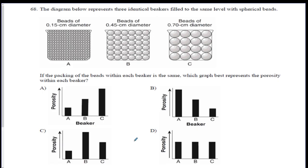Alright, one more question. The diagram represents three identical beakers, filled to the same level, with beads. If the packing of the beads within each beaker is the same, which graph represents the porosity within each beaker? I will give you a hint. We've done this question like three times already. The answer is D. They have the same porosity. They're equal porosity. There's less spaces here, but if you were to add up all the space in this one, all the space in this one, and all the space between all these little particles, they would all be equal.